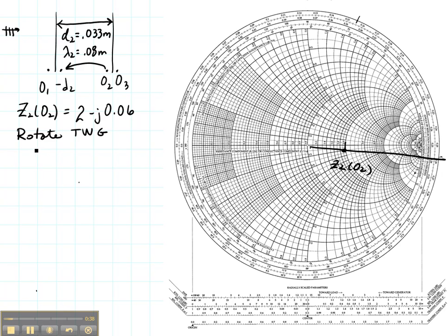So the distance that we're going to go is D2 which is 0.33 meters. We need that in wavelengths because we're working on the Smith chart. So let's divide by the wavelength in region 2 which is 0.8 meters. This tells us that we need to go 0.4 wavelengths toward the generator.